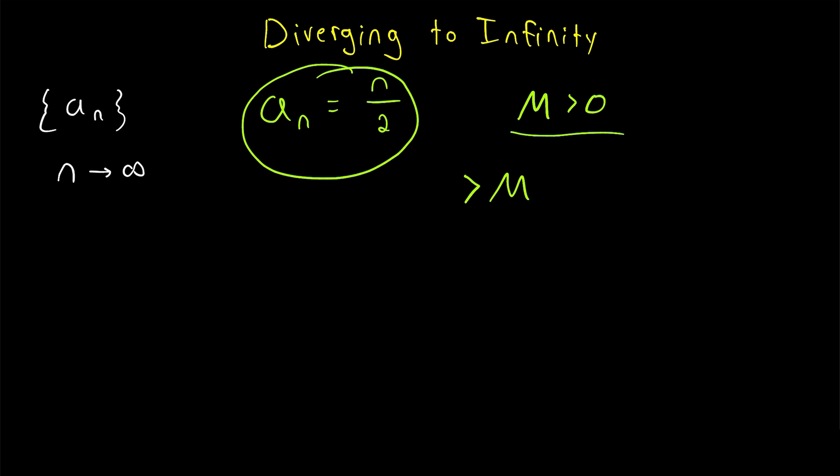That's the basic idea of what it means for a sequence to diverge to positive infinity. So for example, you could provide me an M value of 100. And I want to demonstrate that eventually the terms of this sequence, n over 2, remain greater than 100.